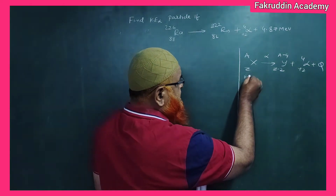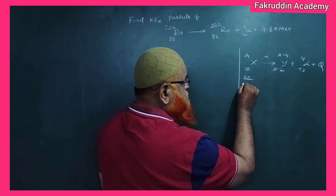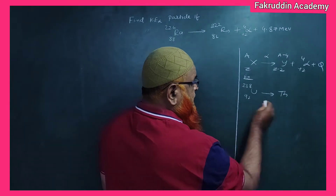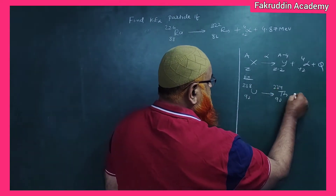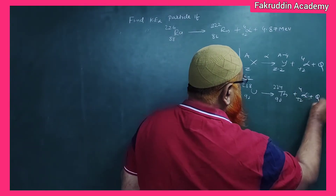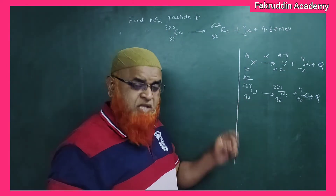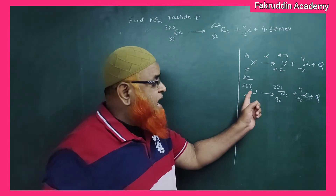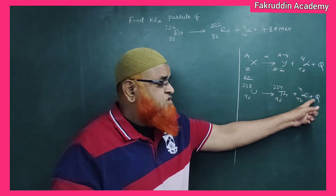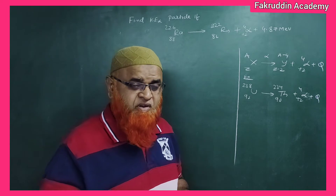For example, uranium-92,238 gives rise to thorium-90,234, plus an alpha particle and a certain amount of heat energy. Whenever an alpha particle is released, the atomic number reduces by 2 units and mass number reduces by 4 units, and a certain amount of heat energy is released because this is an exothermic reaction.